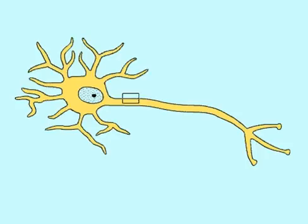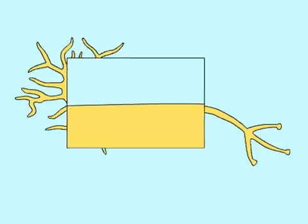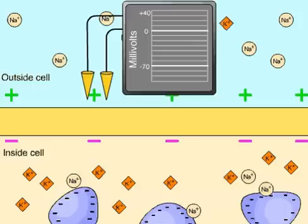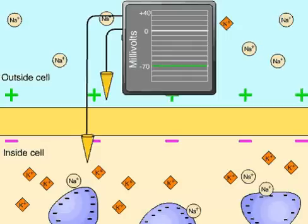A resting neuron, one that is not conducting signals, contains potential energy resulting from an electrical charge difference between the inside and the outside of its plasma membrane. The cytoplasm just inside the membrane is negative in charge, and the fluid just outside the membrane is positive. The membrane is said to be polarized. Like a flashlight battery, the difference in electrical charge carries potential energy, which can be measured as a voltage. The oscilloscope shows this charge difference, called the resting potential, in millivolts. A neuron has a resting potential of about minus 70 millivolts.